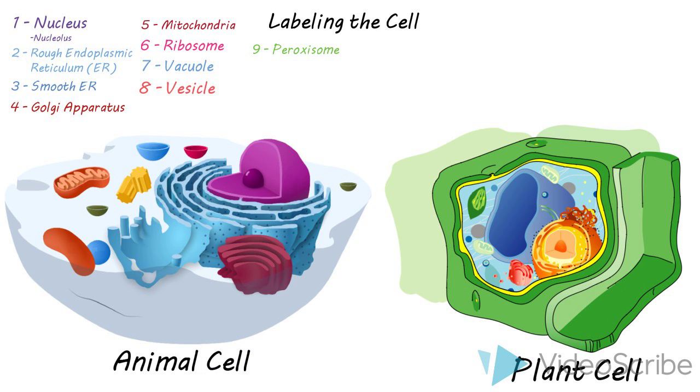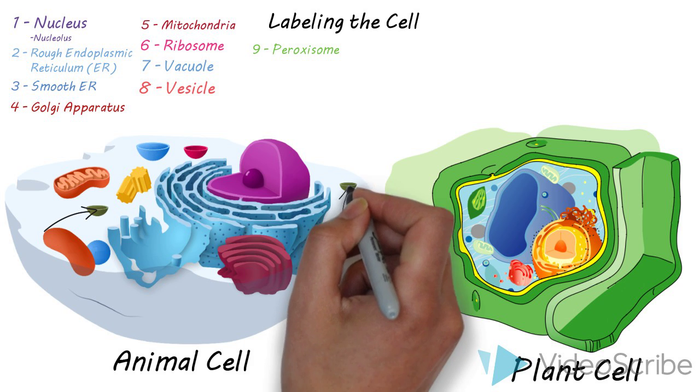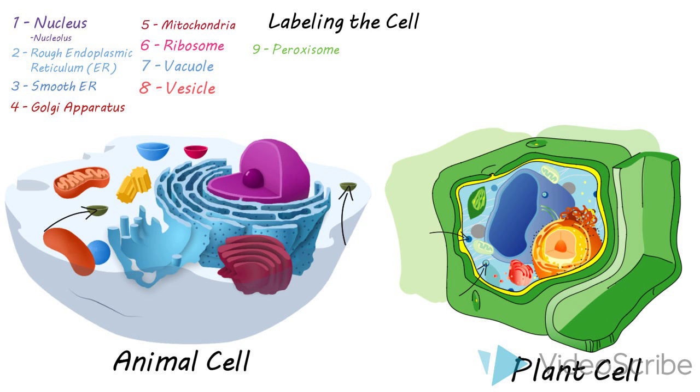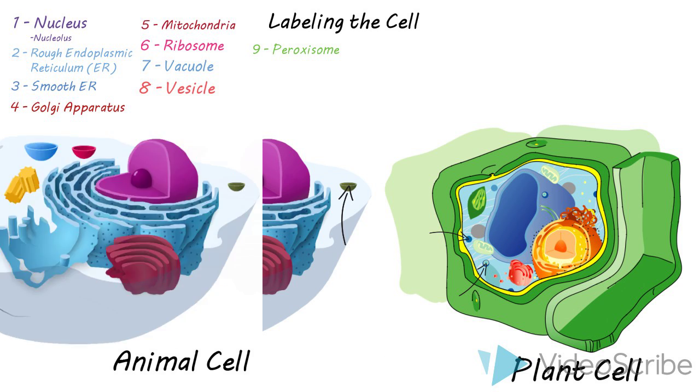Peroxisomes are another small spherical structure in the cell. You should just know there's a lot of small spherical structures and so pay attention to your teacher to know which structures are labeled which among the vesicles and vacuoles and peroxisomes.